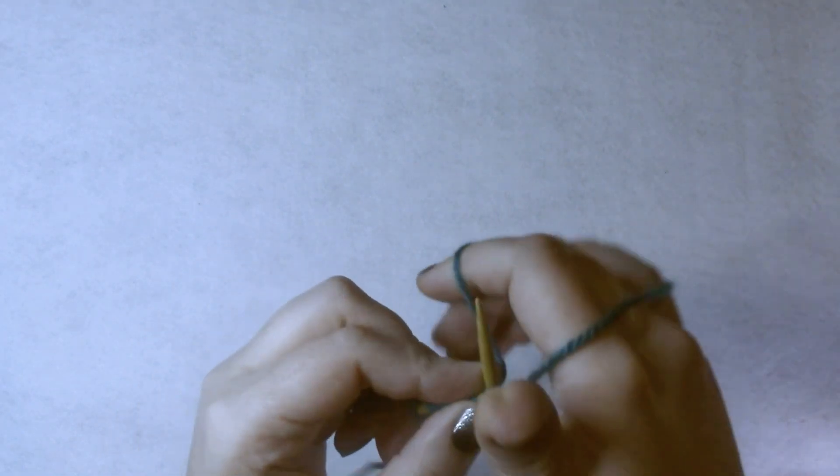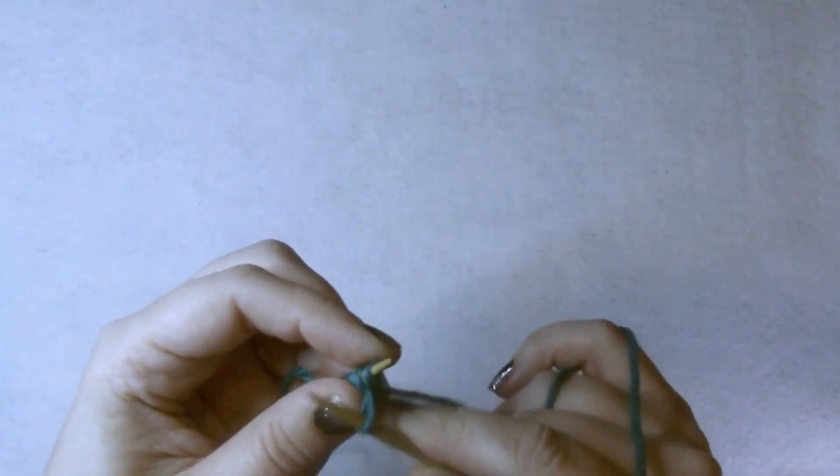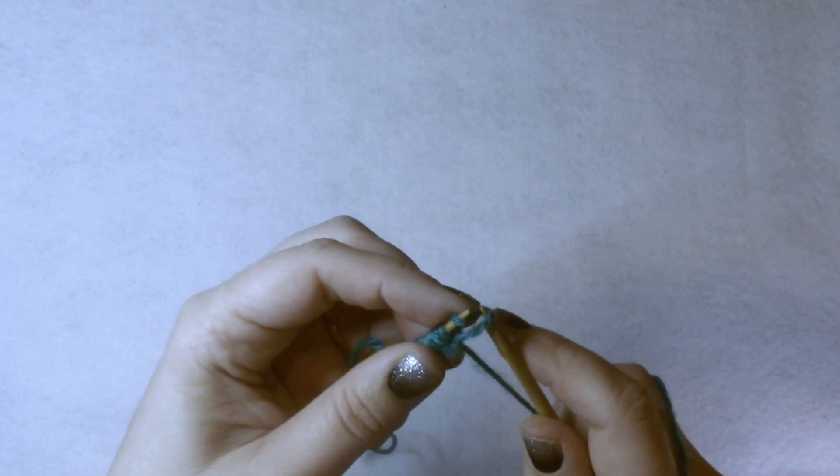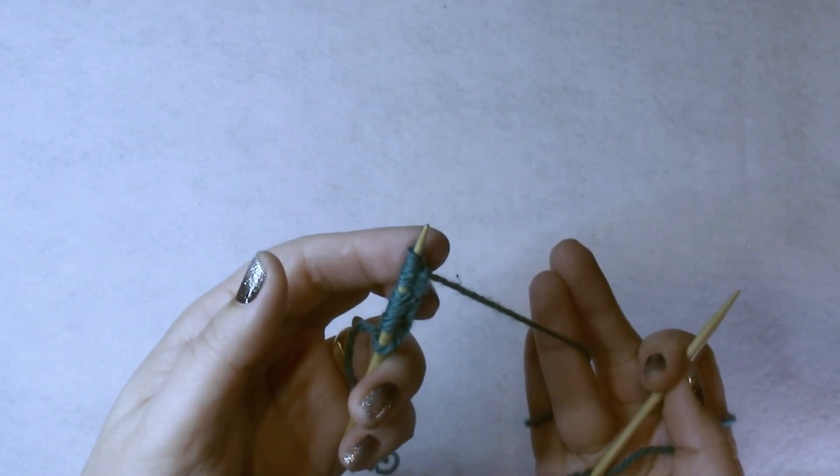And you just keep on going. If you're knitting a whole bunch of them, you might want to put a stitch marker after every 50 or so, so you don't have to keep counting over and over again. But there you go.